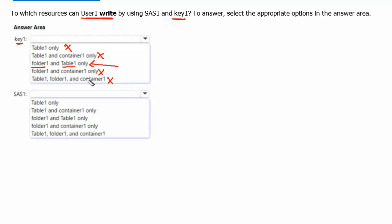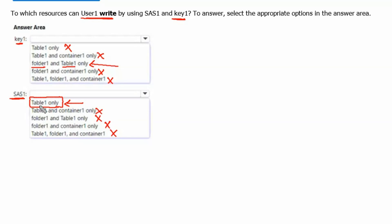For sas1 access: since the exhibit showed only the table service was accessible, only table1 and its entities can be accessed via the shared access signature. All other services — blob containers, file shares — are not accessible. Only table1 and its entities can be accessed using sas1.